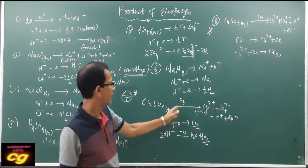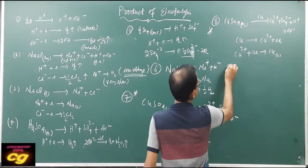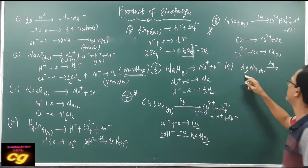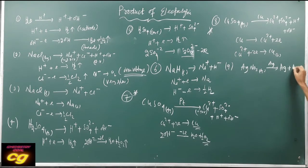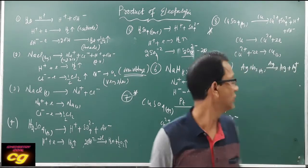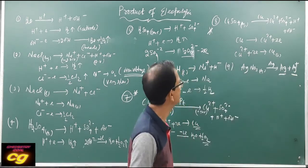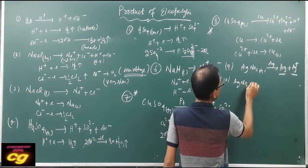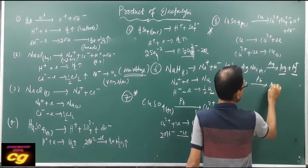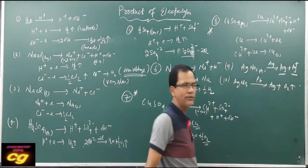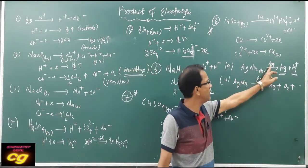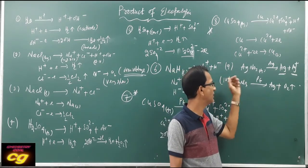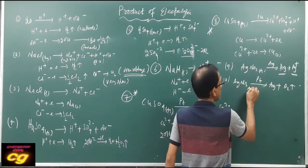Similarly, for silver nitrate solution using a silver rod: silver is produced at the cathode, and silver ion is produced at the anode — so Ag and Ag+ are formed. But if the same AgNO3 solution is used with a platinum rod (non-attacking electrode), then silver is deposited at the cathode and oxygen gas is formed at the anode, because platinum cannot be oxidized.